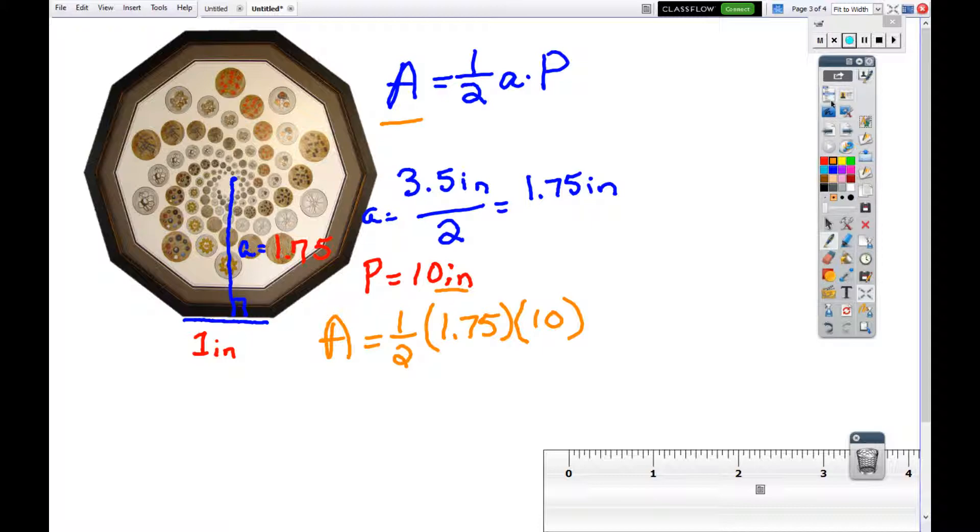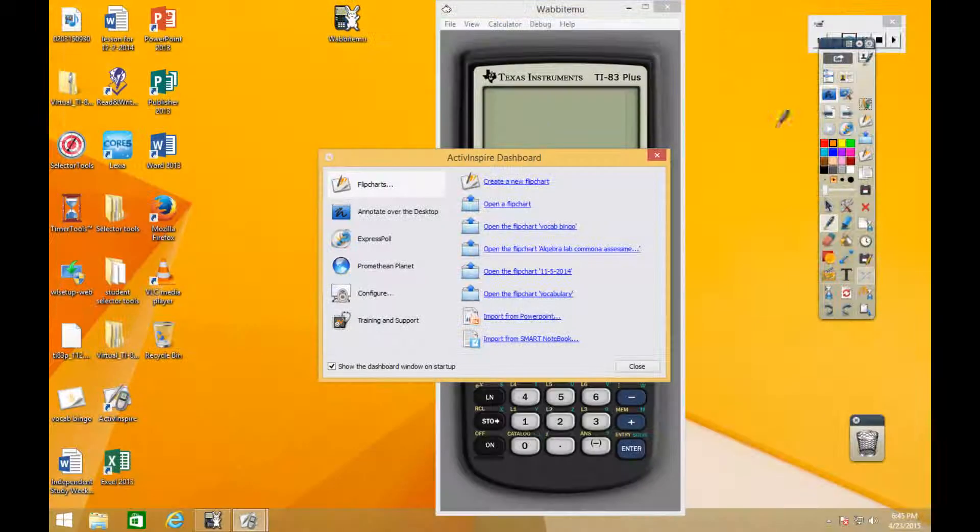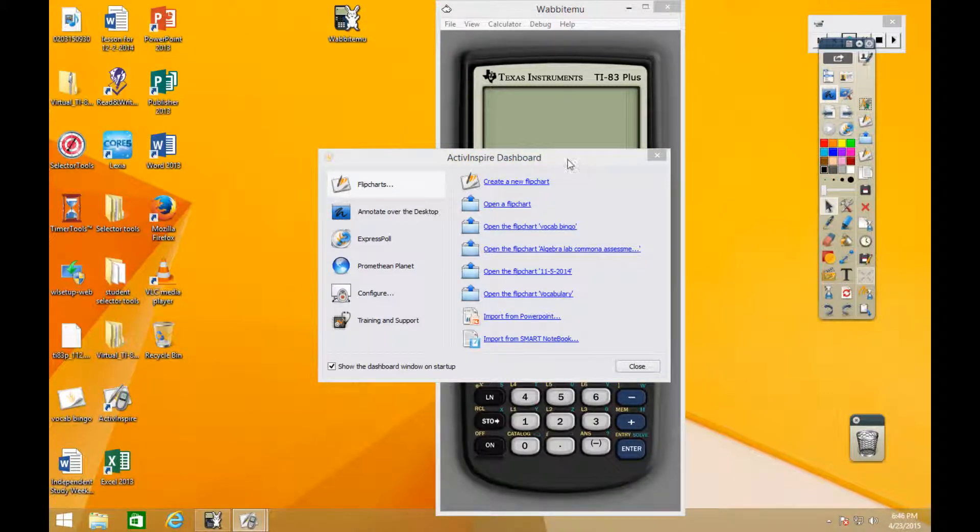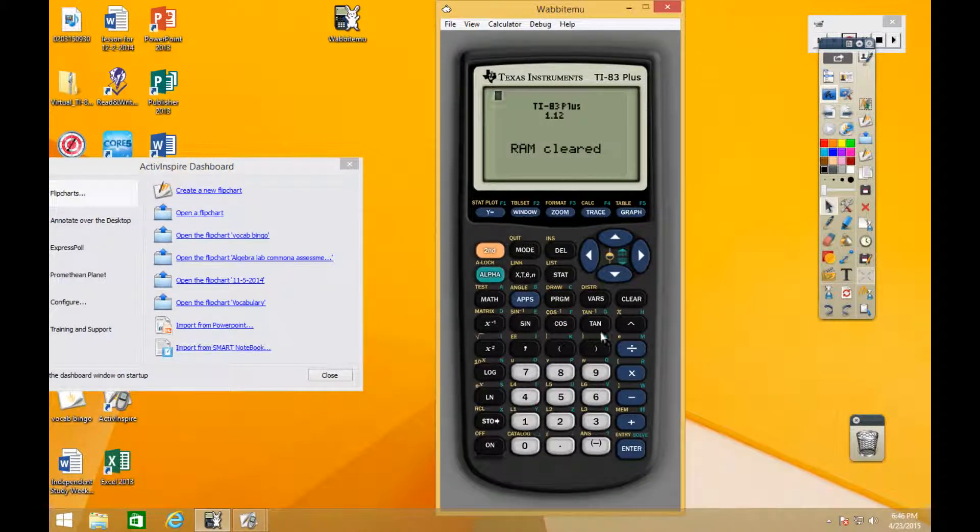So we're going to use the technology that we have. We have 10 times one half times 1.75 for the apothem, and we get 8.75 as our area.